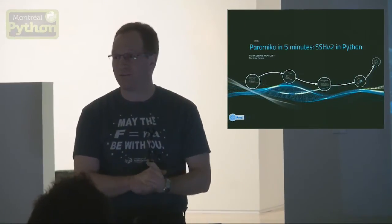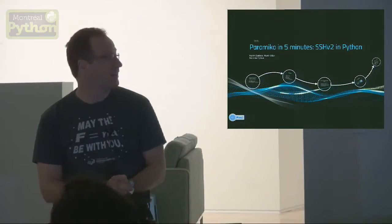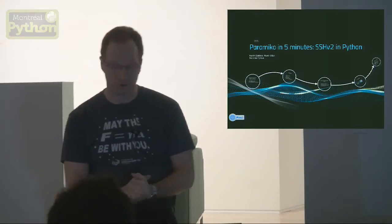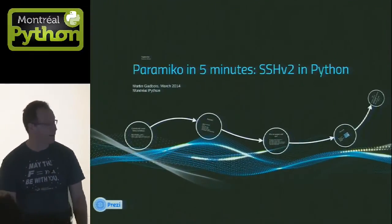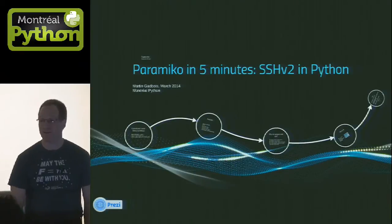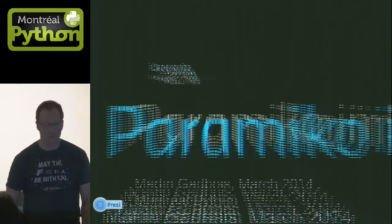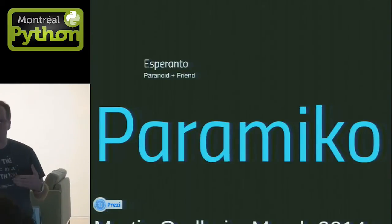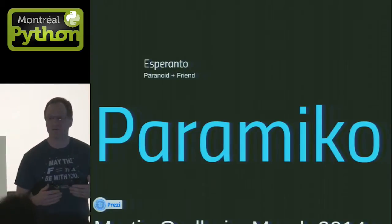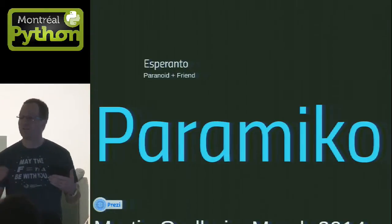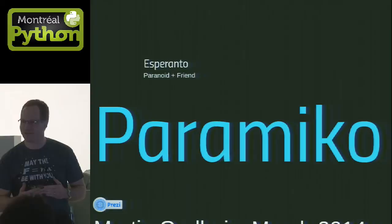I want to talk to you about a small module that I've encountered not too long ago: Paramiko. Paramiko is an SSH v2 implementation in Python. Paramiko is two words in Esperanto — Paranoid and Friend. I think it's very appropriate for a security library.